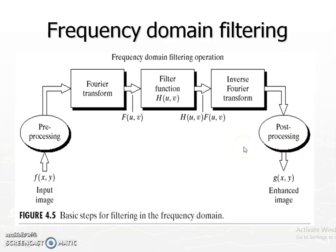This preprocessing and post-processing are mostly not related to the frequency domain filtering itself. What we are interested in is: take the Fourier transform, multiply it with the corresponding filter transfer function, then take the inverse transform. The reason we multiply is because convolution in the spatial domain is filtering, and when we move to the frequency domain that convolution becomes multiplication.